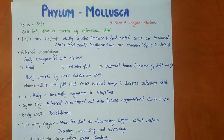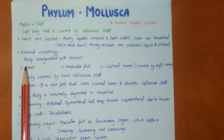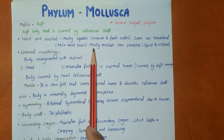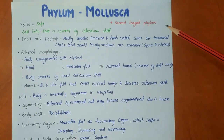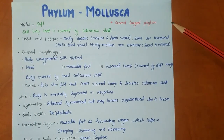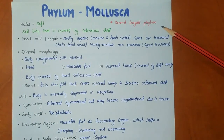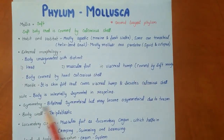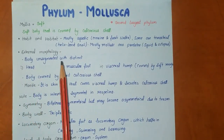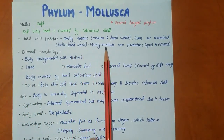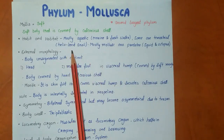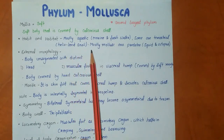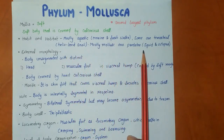Next is phylum Mollusca. 'Mollus' means soft — a soft body covered by a calcareous shell. It is the second largest phylum, after Arthropoda. Regarding habit and habitat, they are mostly aquatic — marine and freshwater. Some are terrestrial, such as Helix (land snail). Most molluscs are predators.